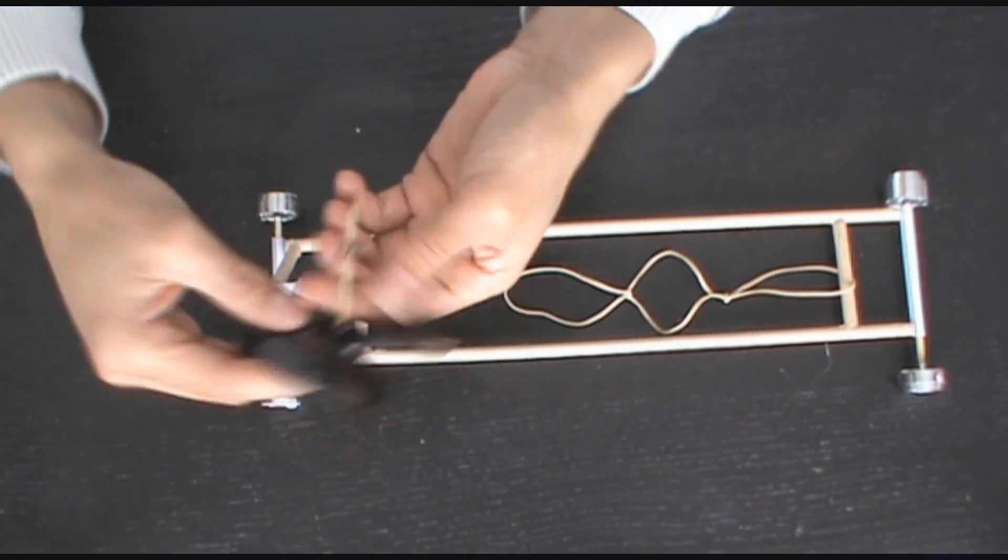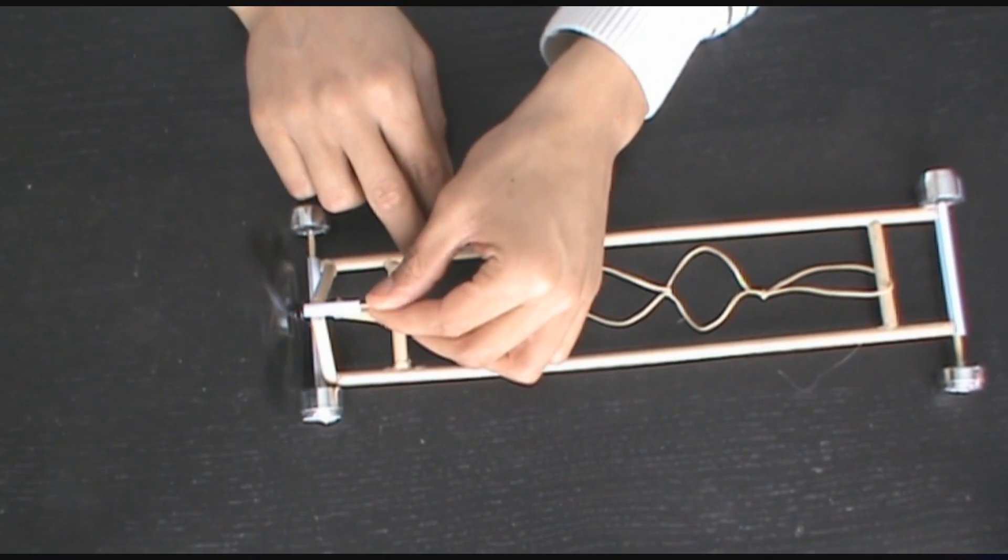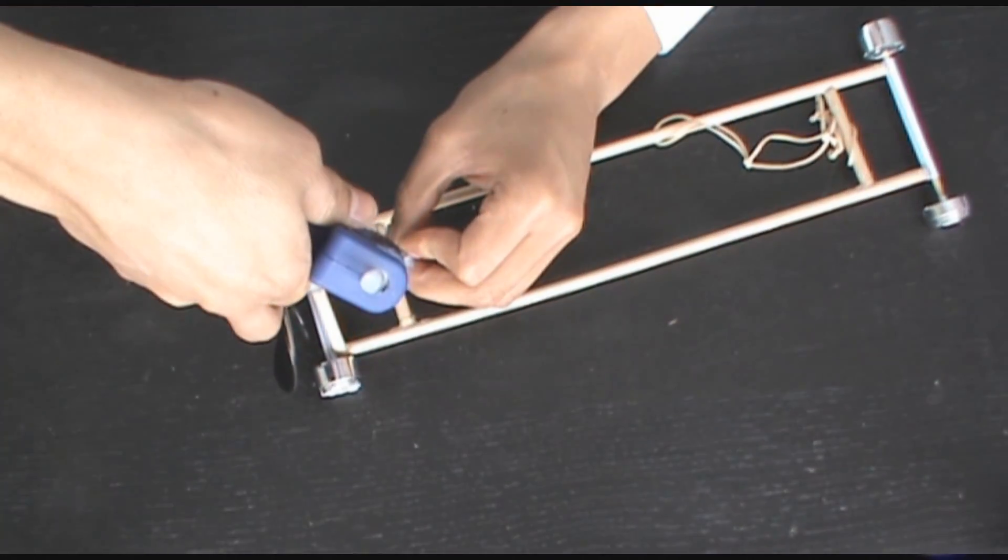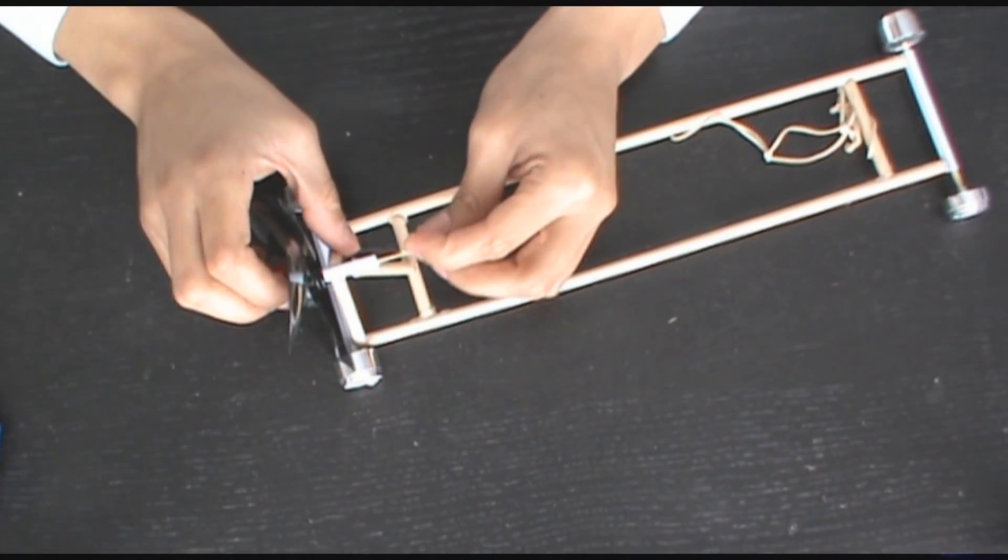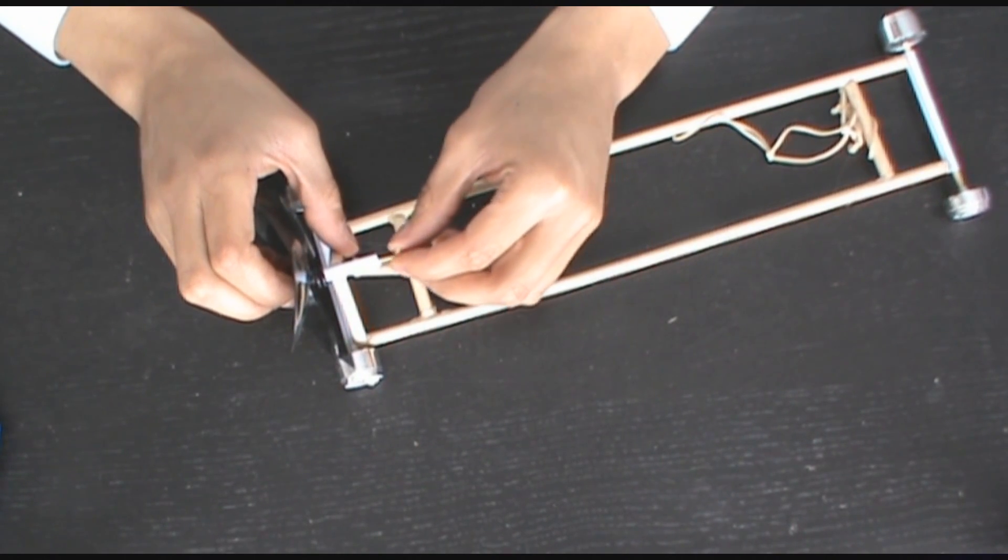Now, once we put the next base on, we can push that through and it spins freely. Now I'm just going to glue another small piece of toothpick on, and this is going to be to help mount the elastic band.